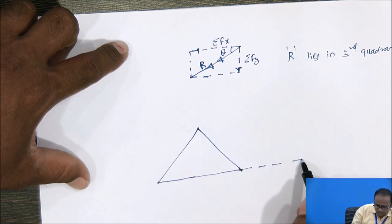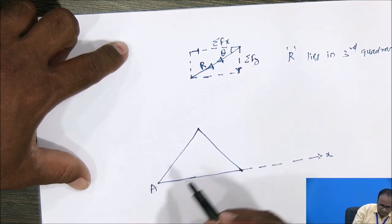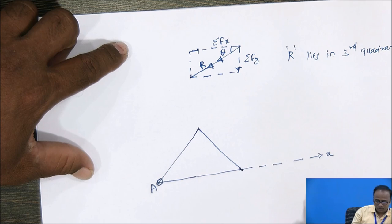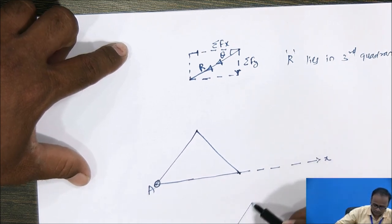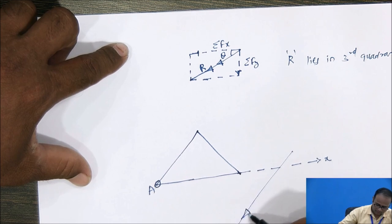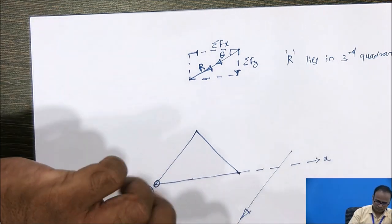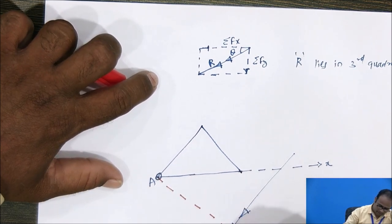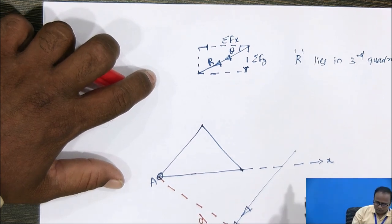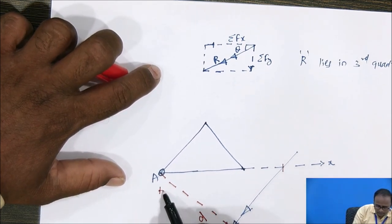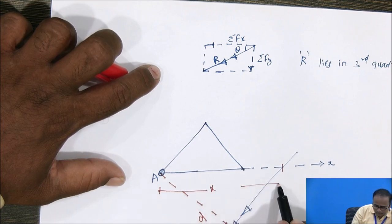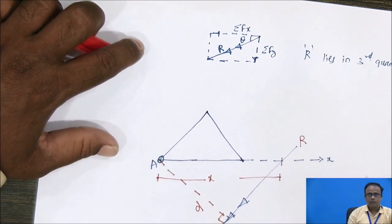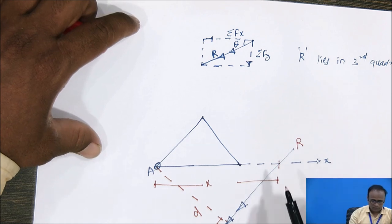This is our X direction. These are the vertices of the triangle and this is point A. Our resultant is in the third quadrant. The perpendicular distance from A is D, and we can also show the X-intercept from point A. In this way we can show the position of R from point A.